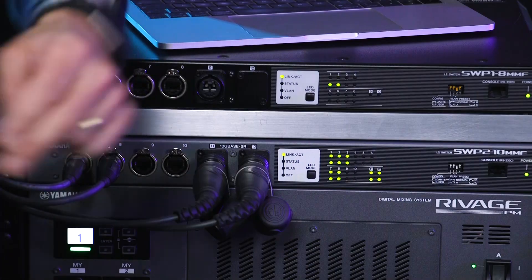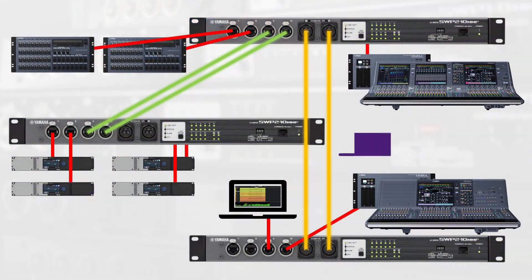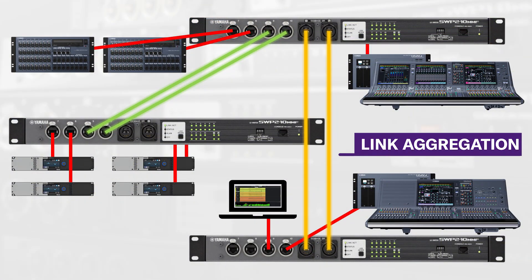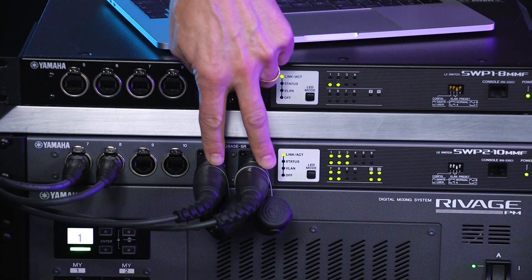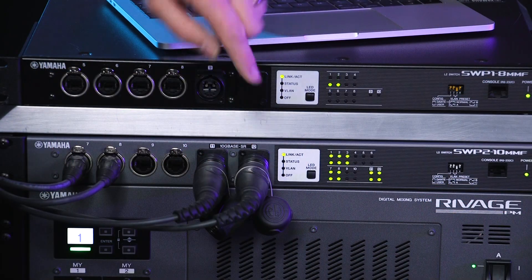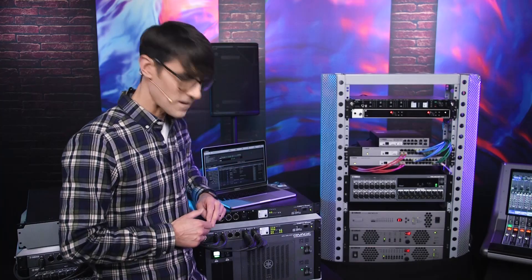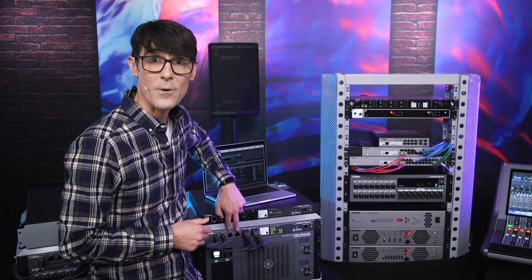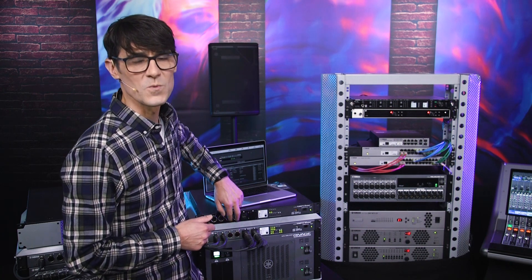If using 10 gigabit is not an option and 1 gig may not be enough, there's a trick you can utilize: link aggregation. This allows you to use two, three, or more ports to link between the same pair of switches, creating a 2 gig, 3 gig, or larger connection. SWP1 and SWP2 switches already have this programmed into Dante presets A and B for the pair of fiber ports. Preset B includes another link for the highest numbered copper ports, allowing an additional increased bandwidth switch connection.